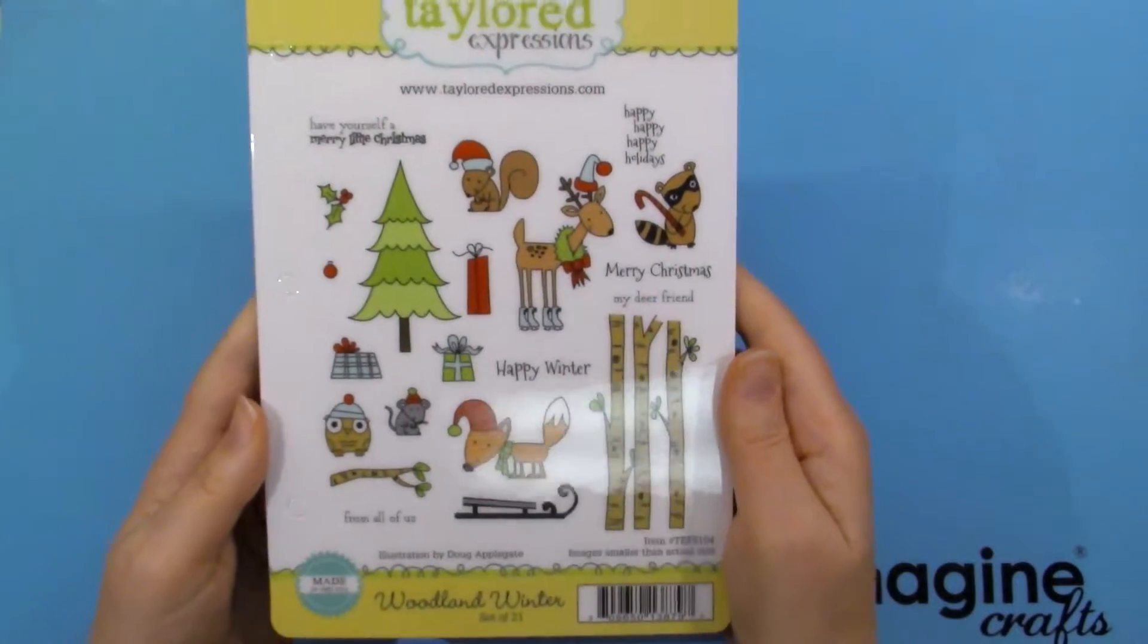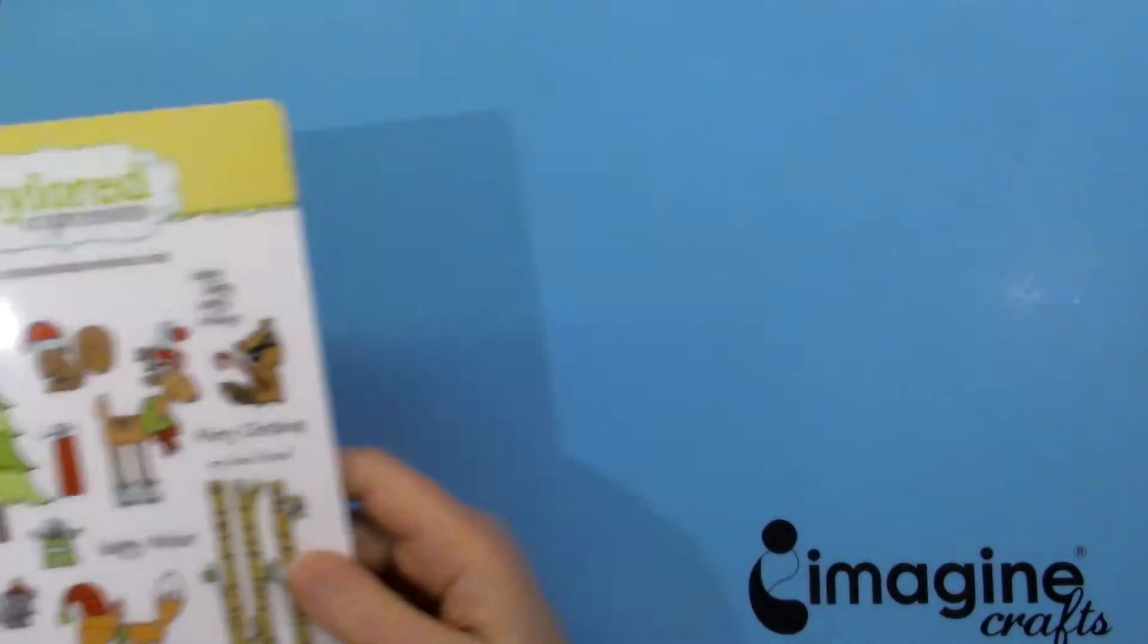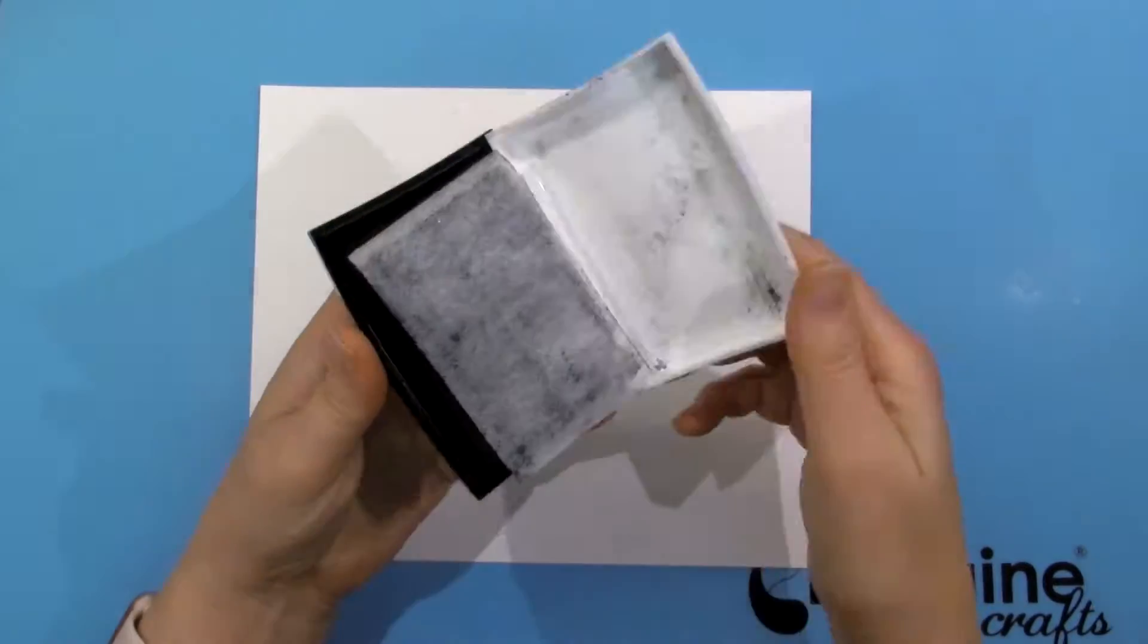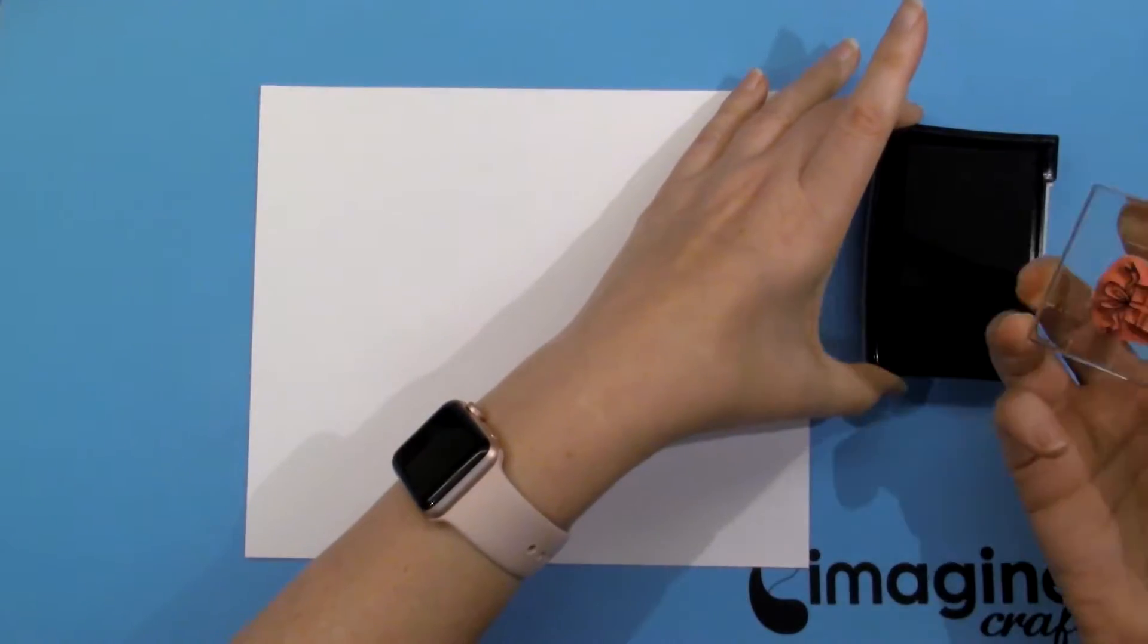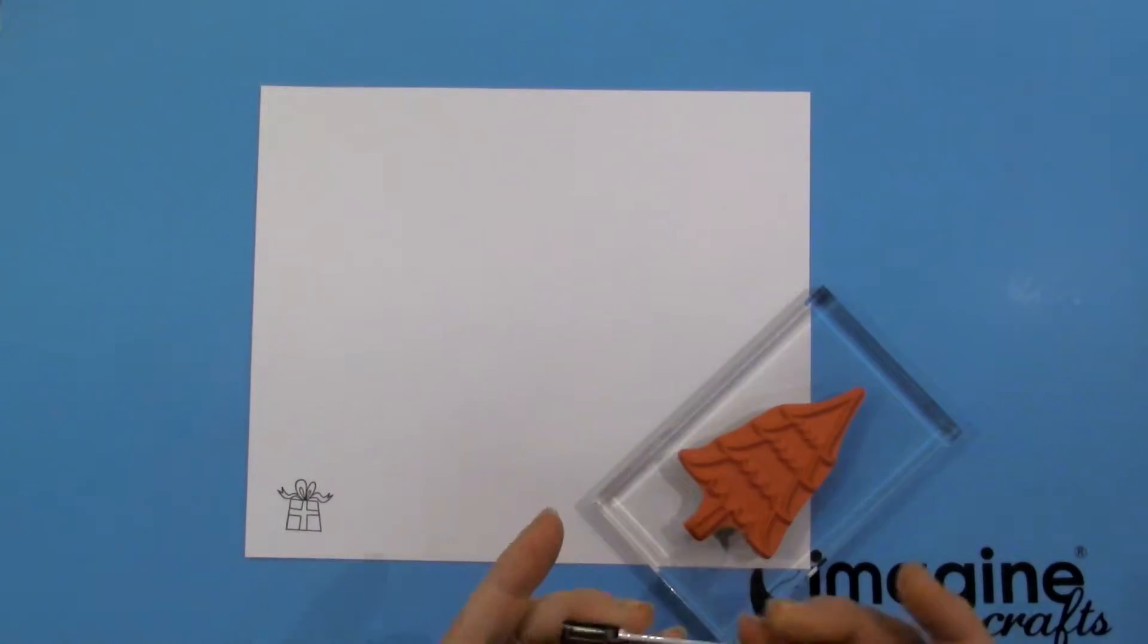I'll be using these stamps from Tailored Expressions. The tree, the fox, and the gift. I'm using VersaFine and Onyx Black to stamp everything. This is a waterproof ink that stamps very crisp and clear. I'm going to stamp the tree and the fox twice because I'm going to do some layering.